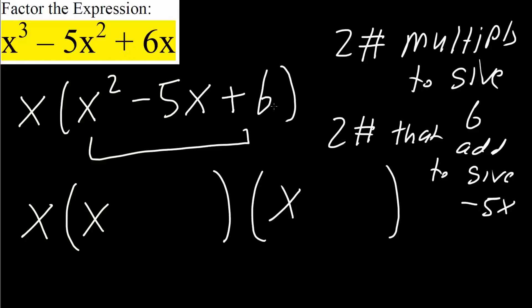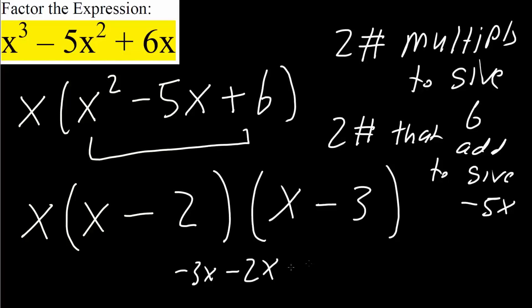Let's try negative 3 and negative 2. x times x is x squared; negative 2 times negative 3 is 6 — that's good. x times negative 3 is negative 3x, and negative 2 times x is negative 2x, which gives us negative 5x in the middle.